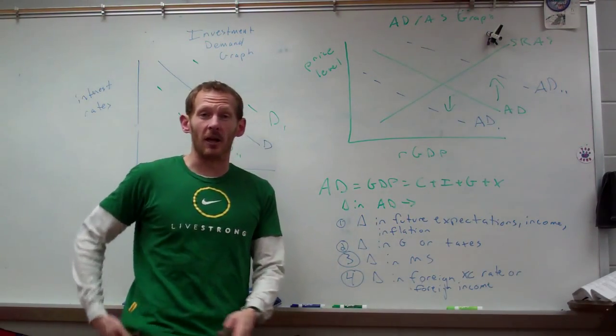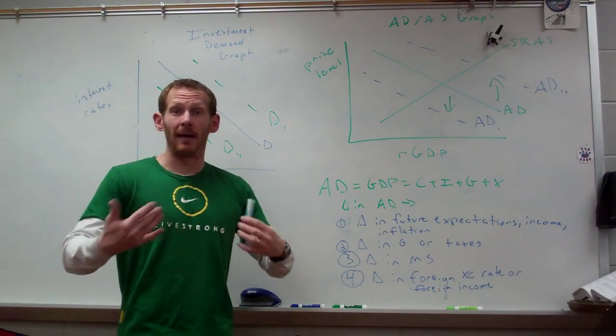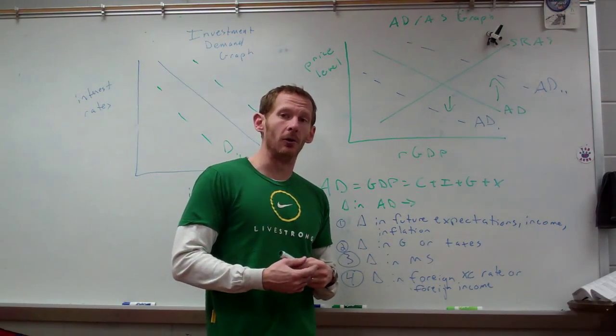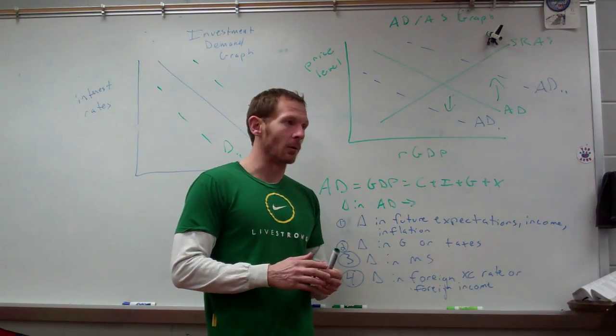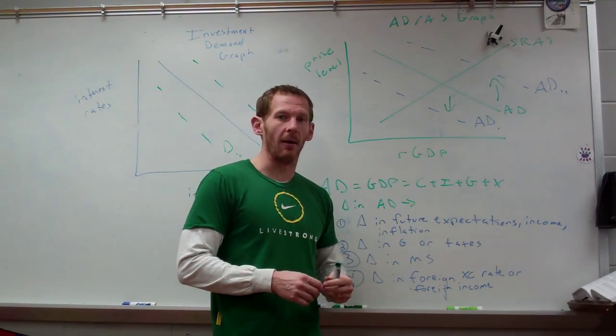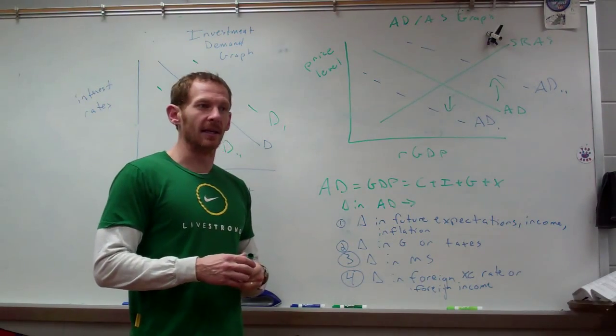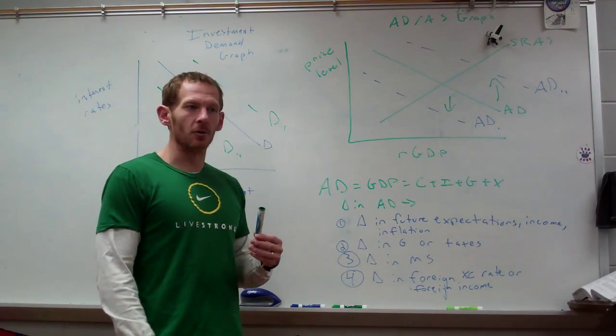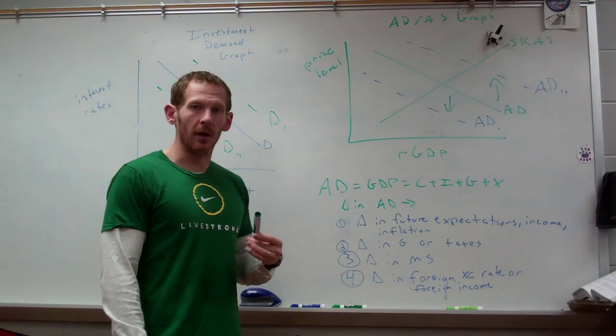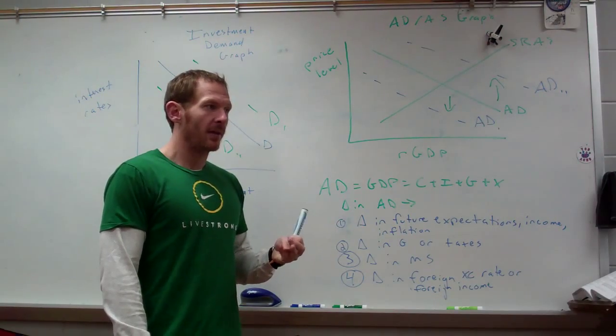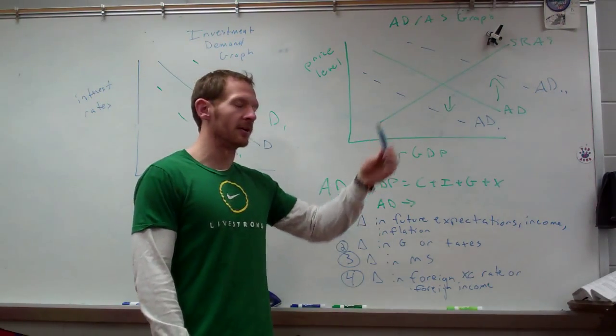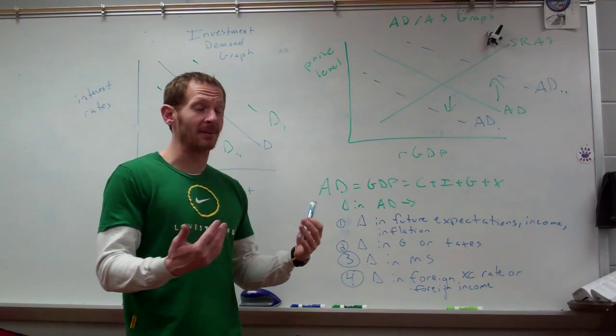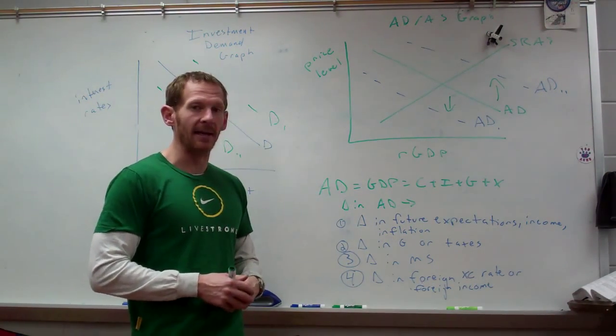If countries that buy lots of our stuff experience growth and they continue to buy lots and lots more American goods, then we might shift to AD sub 2 because they're buying more American goods and our exports are going up. Similarly, if the American dollar is weak compared to other currencies, that would increase exports, which would move us to AD sub 2. If the American dollar is very strong and we are importing a ton and not exporting much, then we might move to AD sub 1.